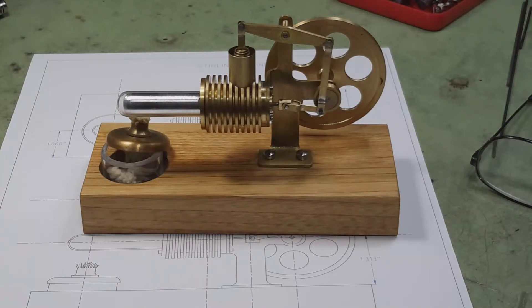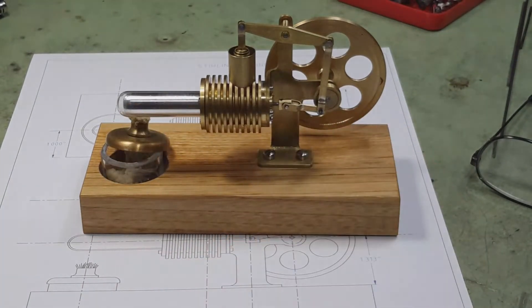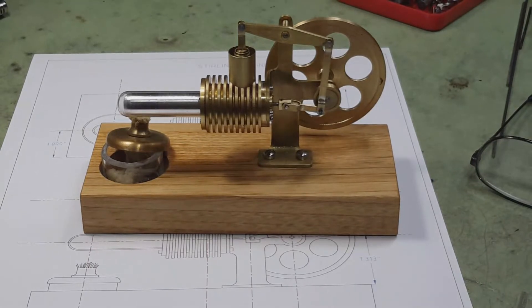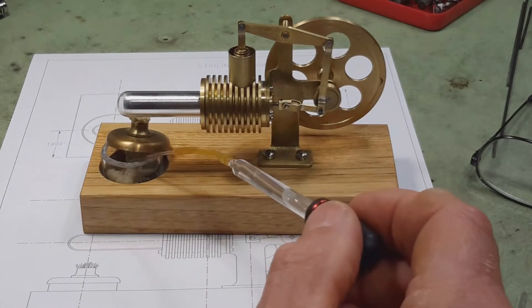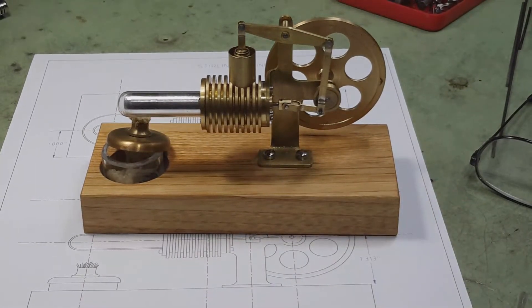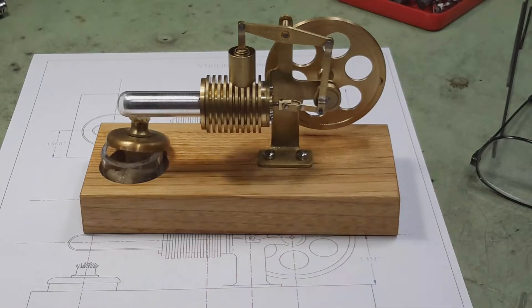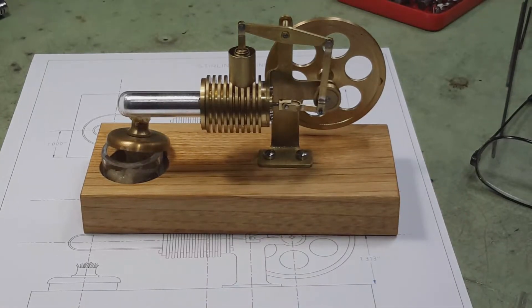Sterling engines are very easy to run. You have to oil a few parts now and then but basically, you just have to light the wick and wait for them to warm up. It's not like a steam engine where you're adding water and then you have to drain the boiler afterwards.